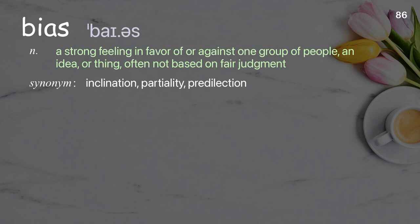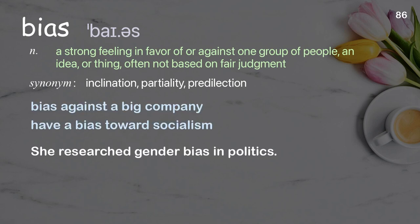Bias: a strong feeling in favor of or against one group of people, an idea, or thing, often not based on fair judgment. Examples: bias against a big company; have a bias towards socialism; she researched gender bias in politics.